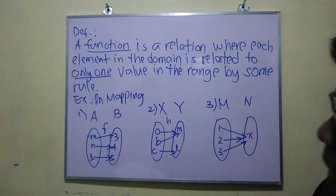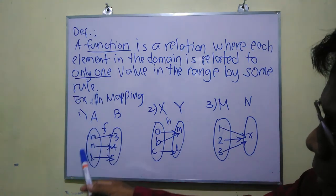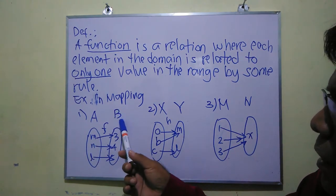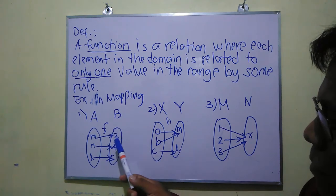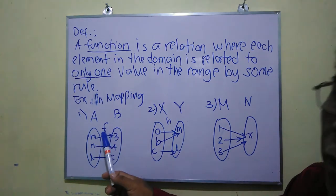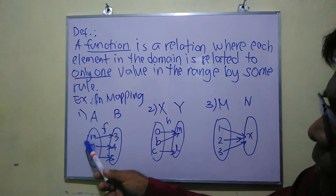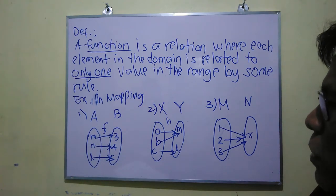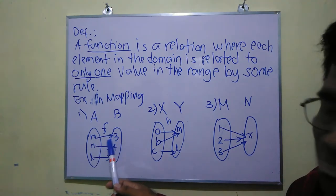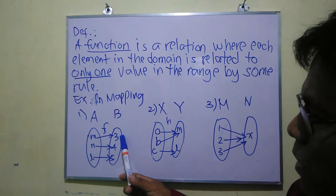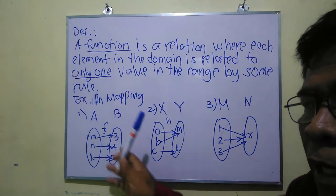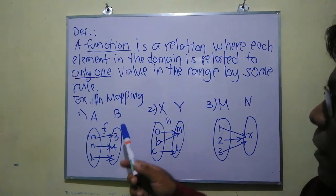Let us look at this example in mapping form. This is set A with elements m, n, and l. Another set B has elements 3, 5, and 4. We call this function f. If we notice, each element of set A corresponds to exactly one element in set B — m corresponds to 3, n corresponds to 4, and l corresponds to 5. Each element has exactly one partner.